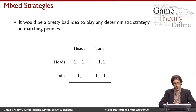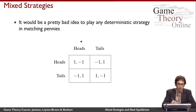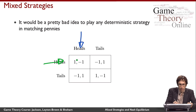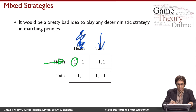Let's begin by looking at the matching pennies game. Recall that it would be a pretty bad idea to play any deterministic strategy in this game. For example, if player two were to play heads, then player one would want to respond by playing heads to get a payoff of one, meaning that player two would prefer to change to tails.